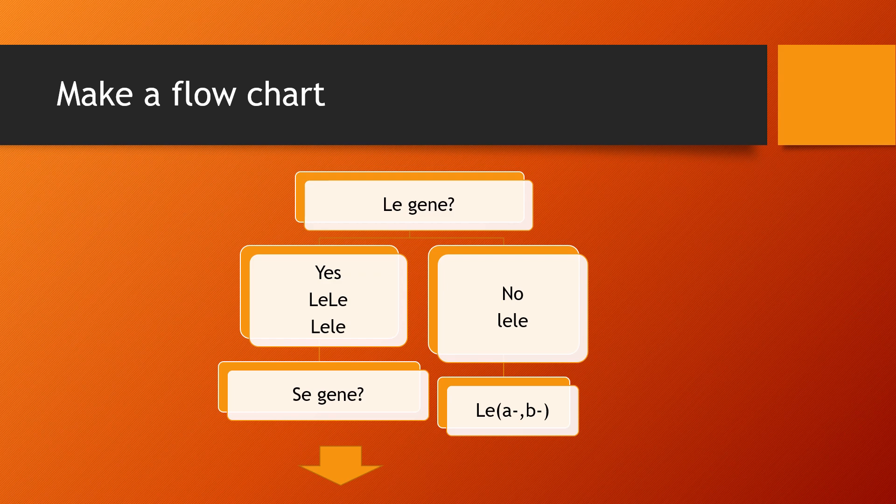If you start here, you can create a flowchart that will help you determine the Lewis phenotype from the genes inherited. The first question you want to ask is: does the person have the capital LE gene? People who are homozygous for lowercase LE will answer no — these people are always Lewis A negative, B negative. People who are homozygous for capital LE, or heterozygous for capital LE and lowercase LE, will answer yes. If the answer is yes, the next question you ask is: do they have the secretor gene?